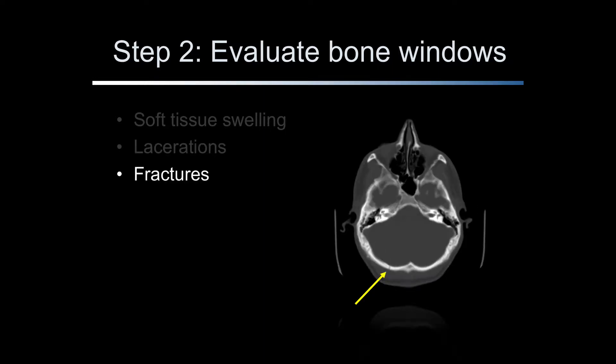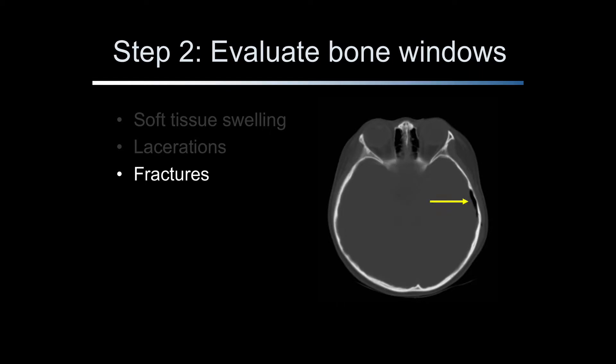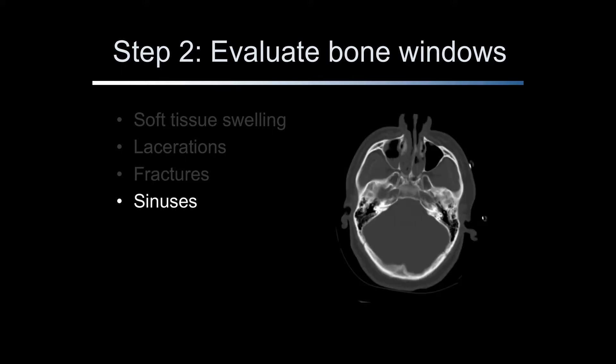Skull fractures are described as linear, basilar, depressed, diastatic, ballistic, open, or comminuted. The corresponding parenchyma windows should be carefully evaluated for hematoma, coup, and contra-coup injuries. Pneumocephalus may be seen in patients with lacerations overlying a skull fracture or fractures involving the inner table of the frontal sinus. Pneumocephalus is best seen on bone windows. Air collections, such as sinus air or intracranial air, are best seen on the bone windows. Mucosal thickening and an air-fluid level are seen in the right maxillary sinus. The bone windows offer an excellent look at paranasal sinuses and mastoid air cells.